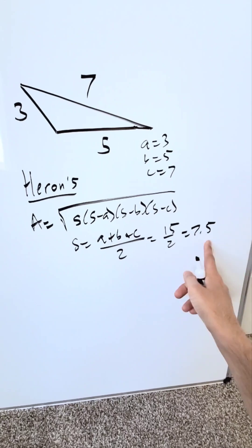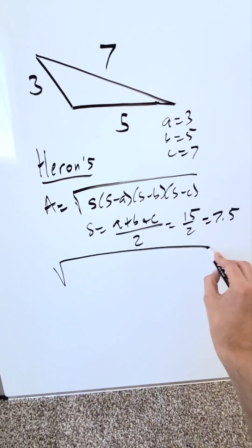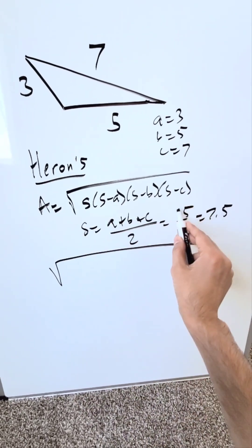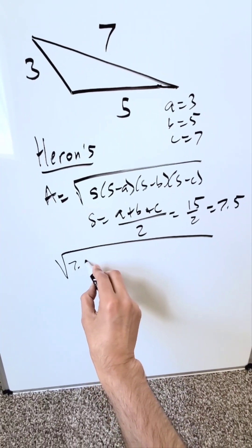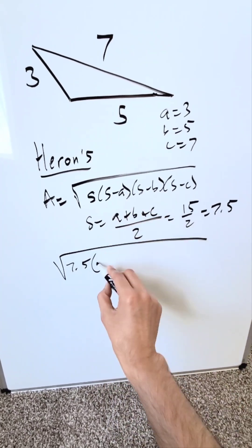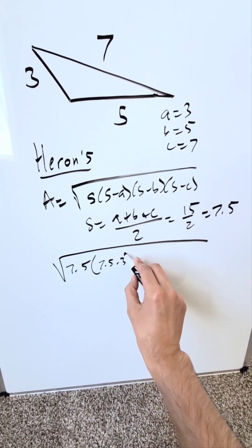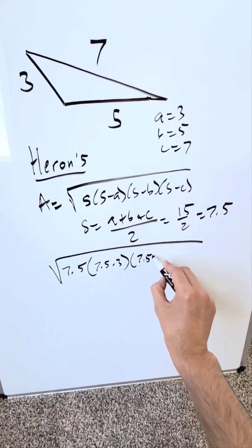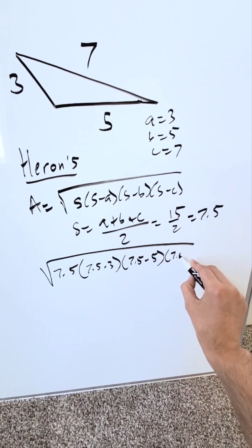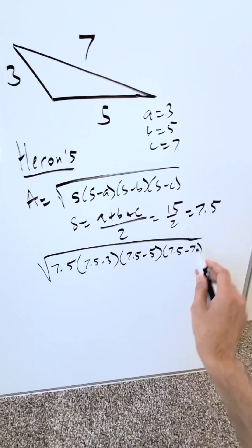You have a, b, c, and s. Run it through your formula right here. This right here is your formula. Put in your items: s is 7.5. Then I have s minus a which is 7.5 minus 3. Then I have 7.5 minus b which is 5. And then I have 7.5 minus c, a 7 comes over there.